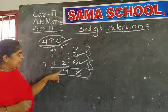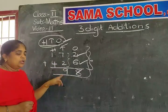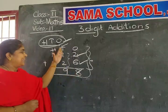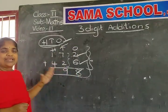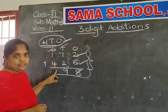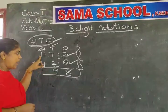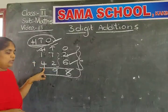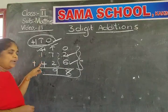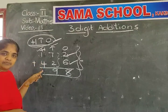Write the tens place answer under the tens place only. Ones place answer in the ones place, tens place answer in the tens place. Now come to the hundreds place. What are the numbers in the hundreds place? One and four. One plus four.